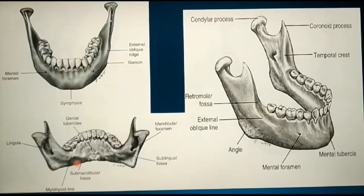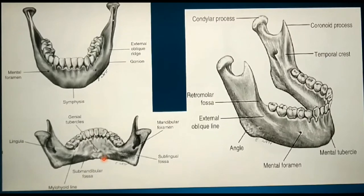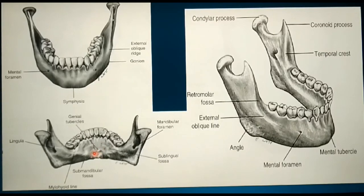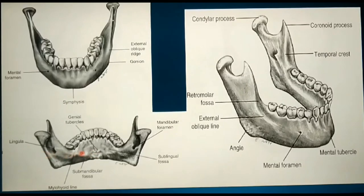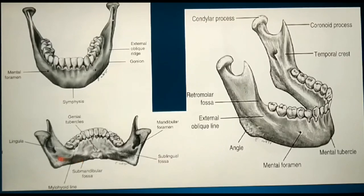Now coming to the inner surface. The inner cortical surface at the midline shows two pairs of bony prominences, termed the genial tubercles. The geniohyoid muscle originates from the inferior genial tubercle. Running horizontally backward is an oblique ridge called the mylohyoid line or mylohyoid ridge, to which the mylohyoid muscle is attached. Below the mylohyoid line is the submandibular fossa, which lodges the submandibular gland, and above is the sublingual fossa, which lodges the sublingual gland.